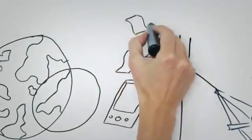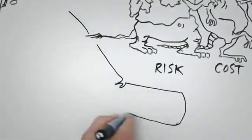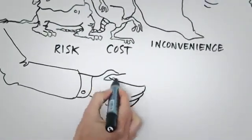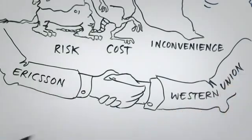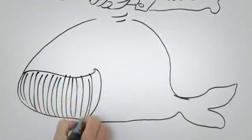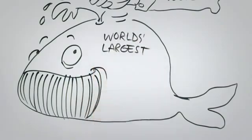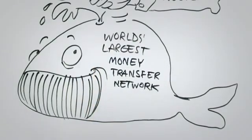2012 meant a big step for m-commerce as Ericsson and Western Union formed a strategic alliance. Mobile network operators can now offer their subscribers the world's largest money transfer network, and we're talking a lot of money.